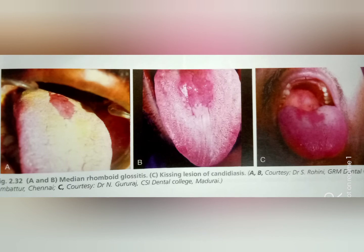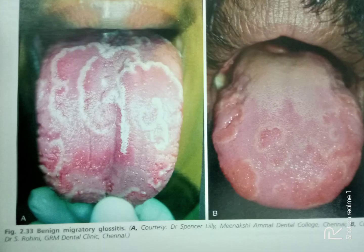This is an example of median rhomboid glossitis, also called kissing lesion. This is benign migratory glossitis.